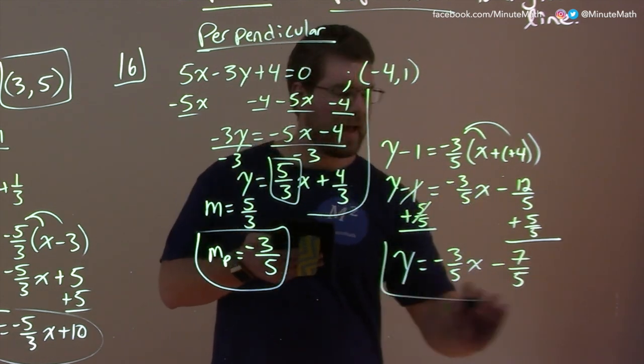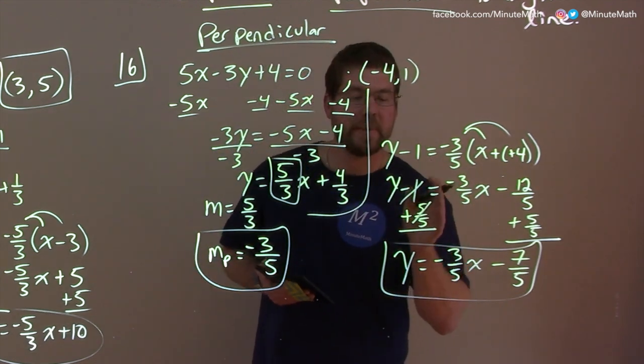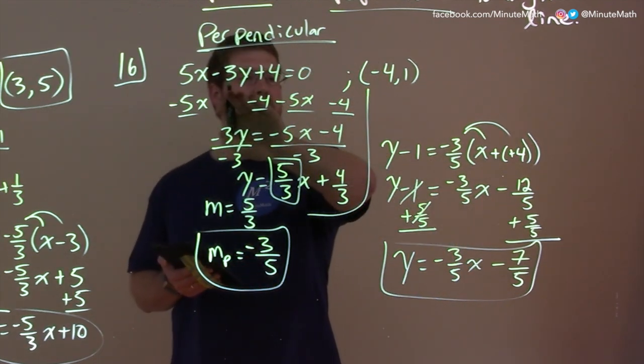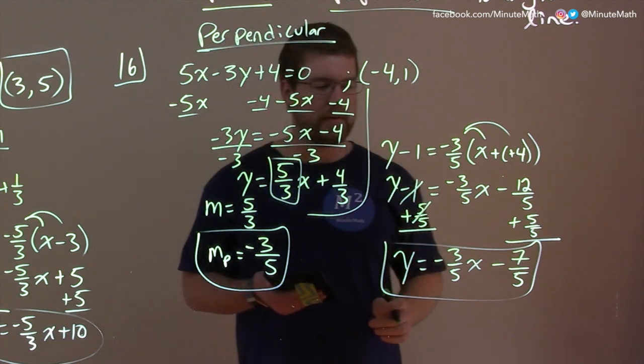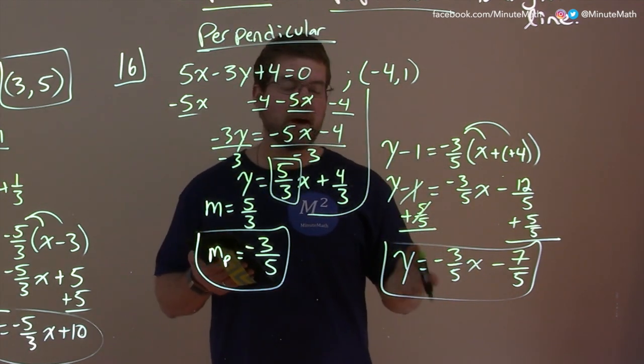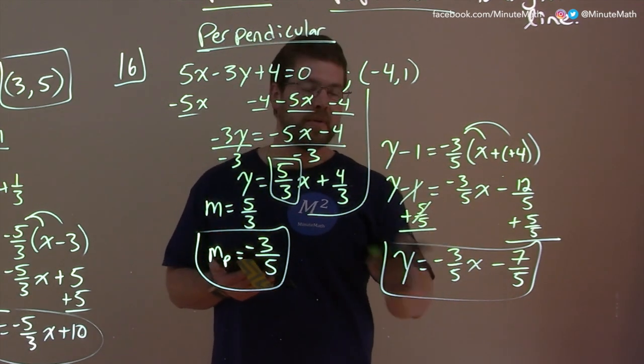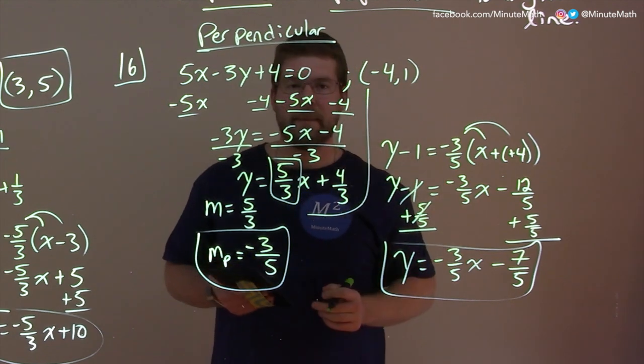And there we have the equation on a line that is perpendicular to the line that was given to us, and it goes through this point. And if we graph these two lines, they'd be perpendicular. They have perpendicular slopes, and then it also goes through that point.